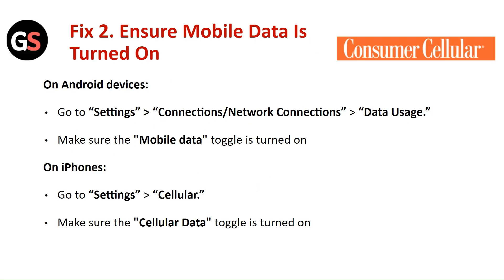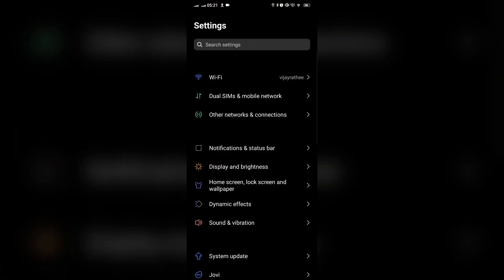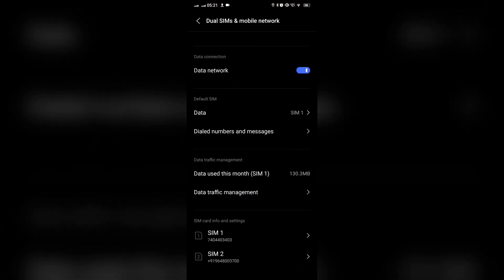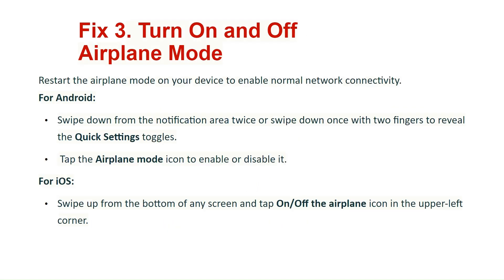Fix 2: Ensure mobile data is turned on. On Android device, go to Settings, then Connection and Network, select Data Usage and make sure the mobile data toggle is turned on. On iPhone, go to Settings, then Cellular and make sure the Cellular Data toggle is turned on.